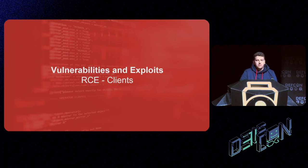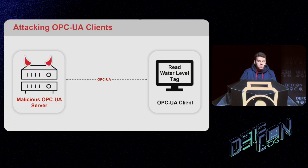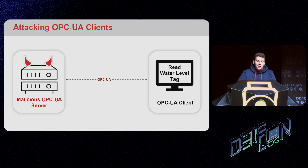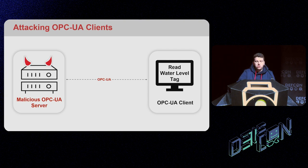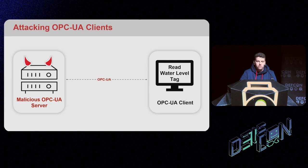The typical attack scenario for exploiting OPC UA clients: we have an OPC UA client connecting to a rogue or malicious OPC UA server, and by returning malicious data the server executes code on the client. We looked at logical bugs and memory corruptions, but those are very tough — the memory corruption Sharon showed takes months to fully exploit on a Windows 10 machine. However, we thought maybe there's an easier way to exploit OPC UA clients.